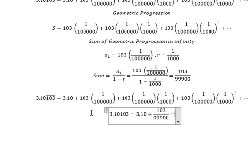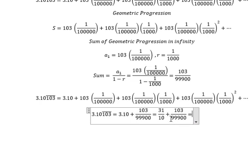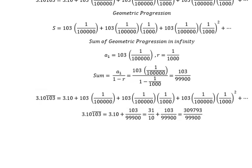3.1 equals 31 over 10. We need to combine these two fractions, and this is the final answer we need to find. This is the end, thank you for watching.